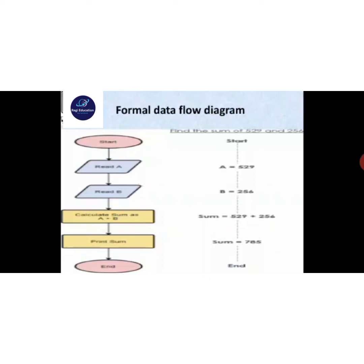In the formal data flow diagram example, an oval (start) leads to a square (read A, read B), then a process step (calculate sum as A plus B), then print sum and end. For example: A equals 529, B equals 256, so sum equals 529 plus 256, which equals 785, then end. This program is represented diagrammatically as a flowchart, so we can understand the program concept easily.